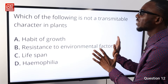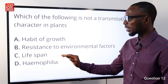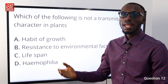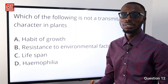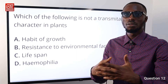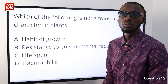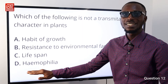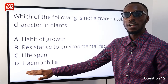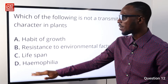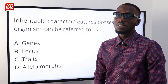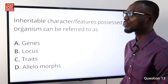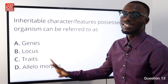Question number twelve: which of the following is not a transmittable character in plants? Starting from option D: hemophilia is a genetic condition whereby an individual is unable to make their blood clot, so when there is a wound, bleeding would not easily stop. Hemophilia is a genetic condition or disorder that can only be found in the human system — so option D is correct. Question number thirteen: inheritable characters or features possessed by an organism can be referred to as what? This is referred to as traits or characters. So option C is correct.